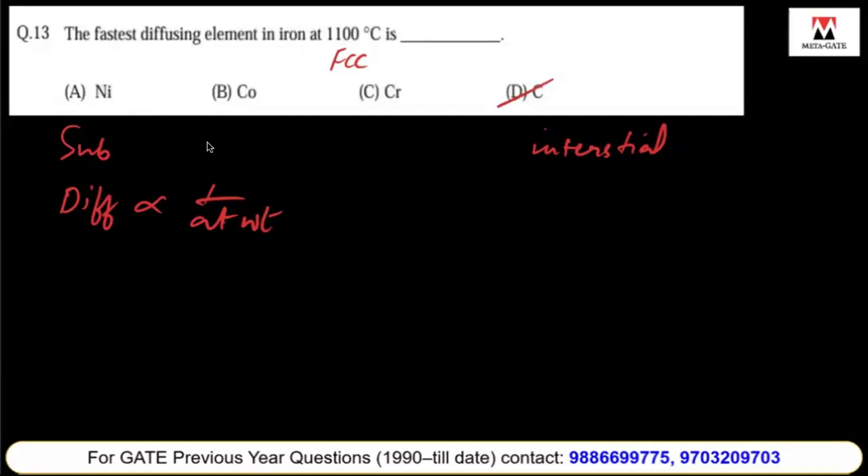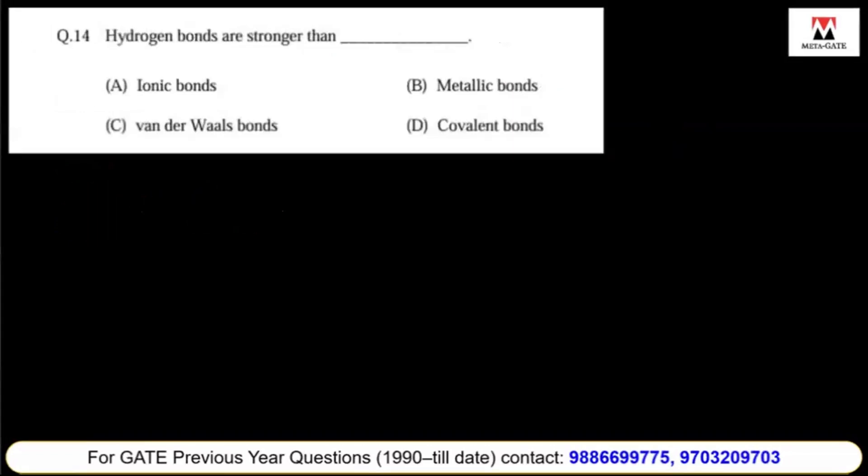For metallic bond, van der Waals bonds, and covalent bonds: if you see atomic bonding strength, ionic bonds have more strength than covalent, then metallic, then hydrogen, then van der Waals. So hydrogen bonds are stronger than van der Waals bonds.